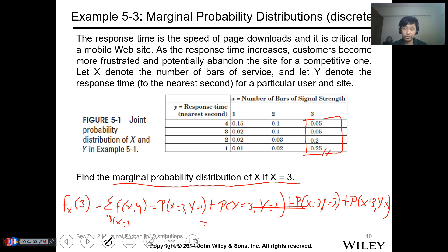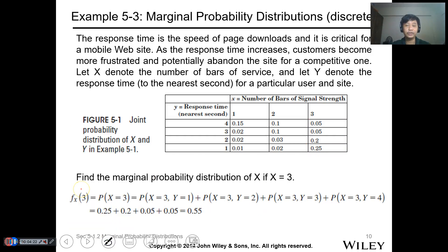This is f(x) given 3, which is just the summation of f(x,y) for all values of y given x equals 3. So this is just the sum of all these probabilities. So the probability of x equals 3, y equals 1, plus probability of x equals 3, y equals 2, plus probability of x equals 3, y equals 3, and probability of x equals 3, y equals 4. Using the calculator: 0.05 plus 0.05 plus 0.2 plus 0.25. The answer is 0.55.